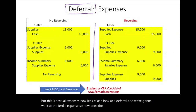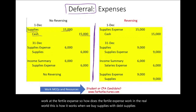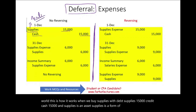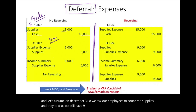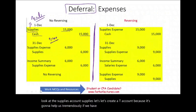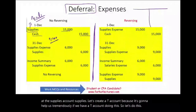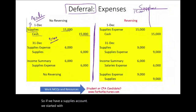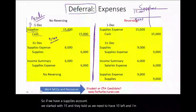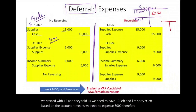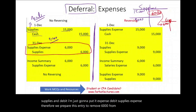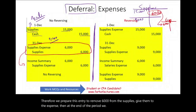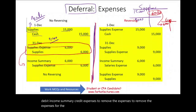How does deferral expense work? In the real world, when we buy supplies we debit supplies $15,000 and credit cash $15,000 — supplies is an asset, a form of prepaid deferral. On December 31st, we ask employees to count the supplies and they tell us we still have $9,000 on hand. Looking at the supplies T-account: we started with $15,000, and with $9,000 remaining we need to expense $6,000. We credit supplies and debit supplies expense for $6,000, then at period-end we close by debiting income summary and crediting expenses. This is the no-reversing normal method — if you initially debit an asset, no reversing is needed.